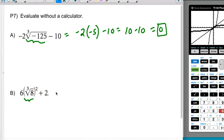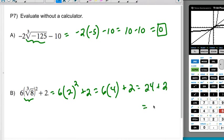The cube root of 8 is 2, so this is going to be 6 times 2 quantity squared plus 2, which is going to be 6 times 4 plus 2, which is 24 plus 2, so I get 26. And that is it for this video.